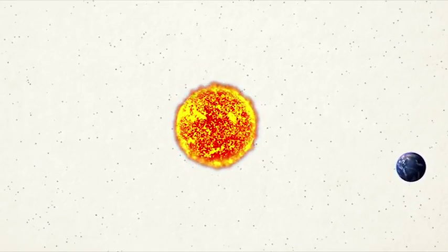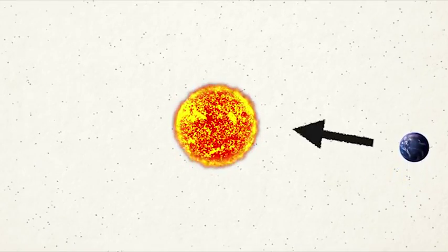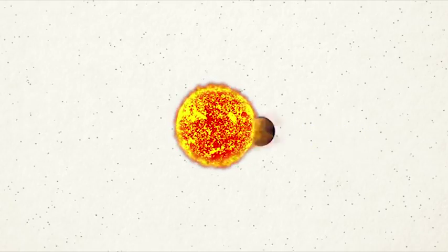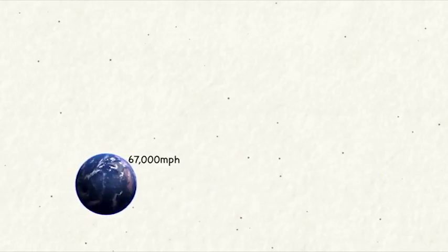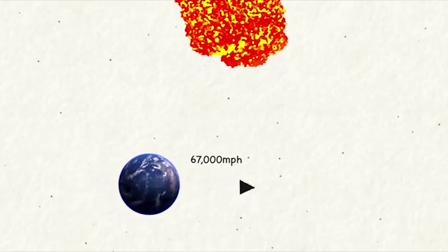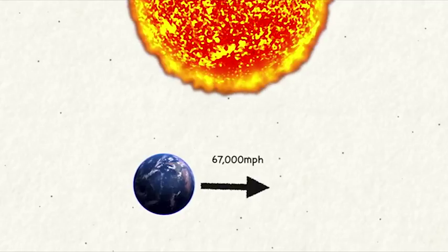The answer is related to why Earth doesn't just fall straight into the Sun, despite the strong gravitational attraction. Earth, and everything on it, is traveling very fast, about 67,000 miles per hour, in a direction that is basically always sideways relative to the Sun.